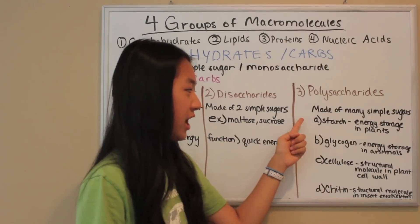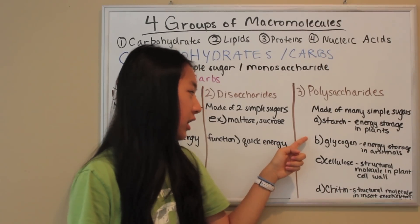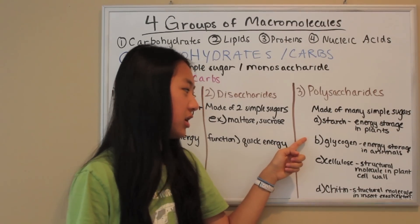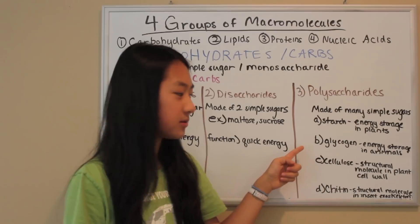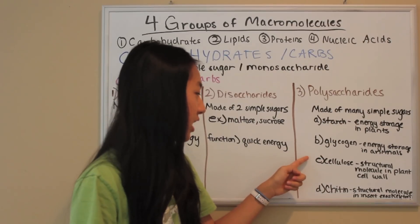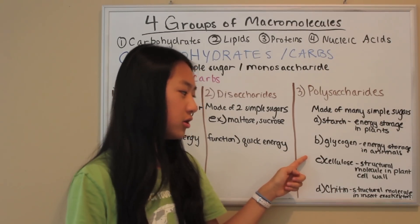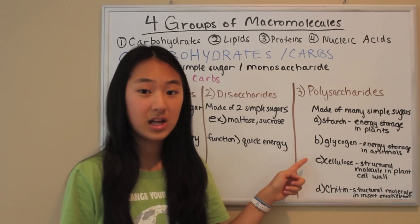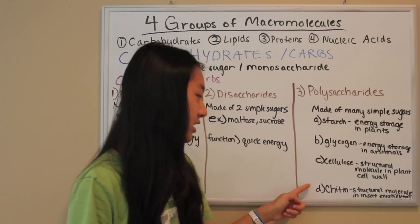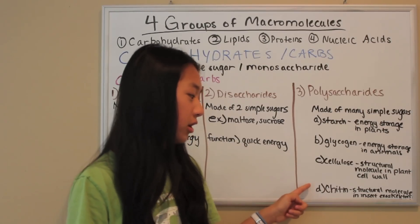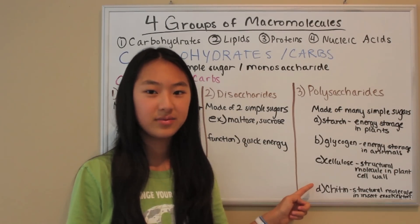Starch is energy storage in plants. Glycogen is energy storage in animals. Cellulose is the structural molecule in plant cell walls, and chitin is the structural molecule in insects' exoskeletons.